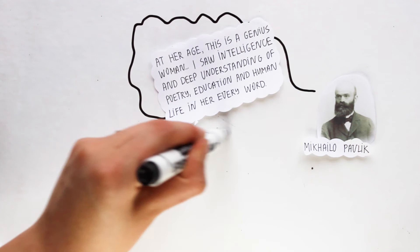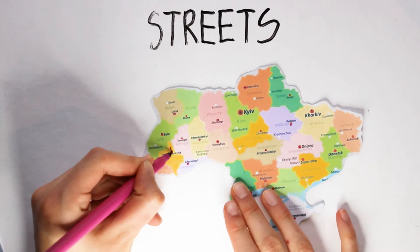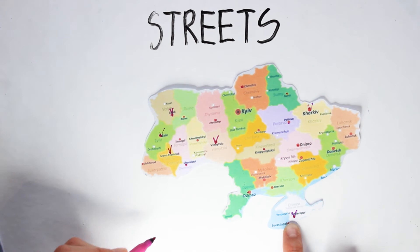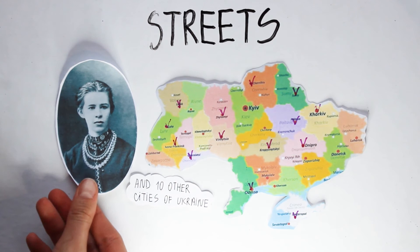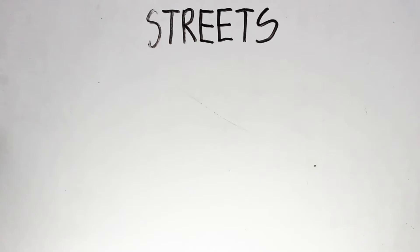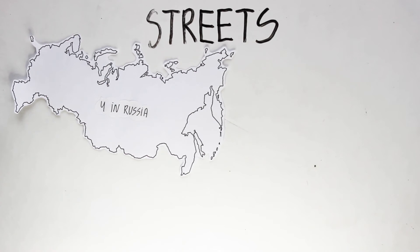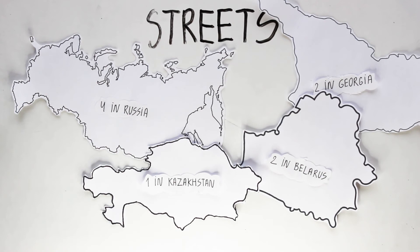The streets in Ivano-Frankivsk, Vinnitsa, Kharkiv, Lutsk, Simferopol, Lviv, Chernivtsi, Cherkasy, Odesa, Zhytomyr, Poltava, Kropyvnytsky, Sumy, Dnipro and ten other cities of Ukraine are named in honor of Lesya Ukrainka. There are also four in Russia, two in Georgia, two in Belarus and one in Kazakhstan, named after our great poetess.